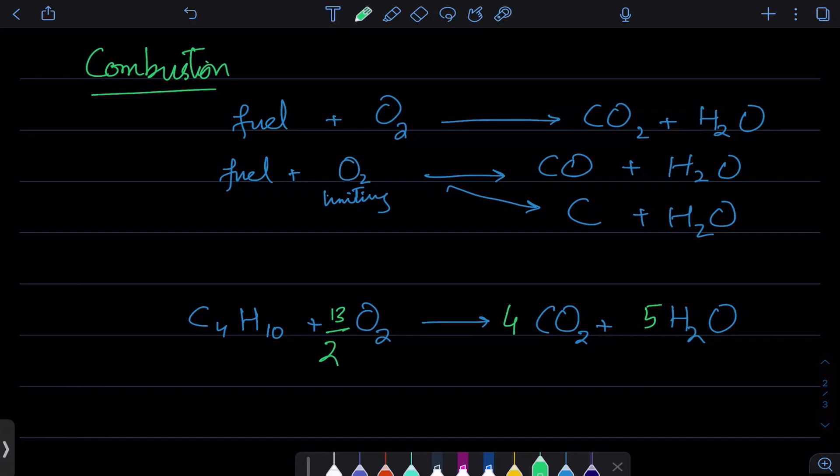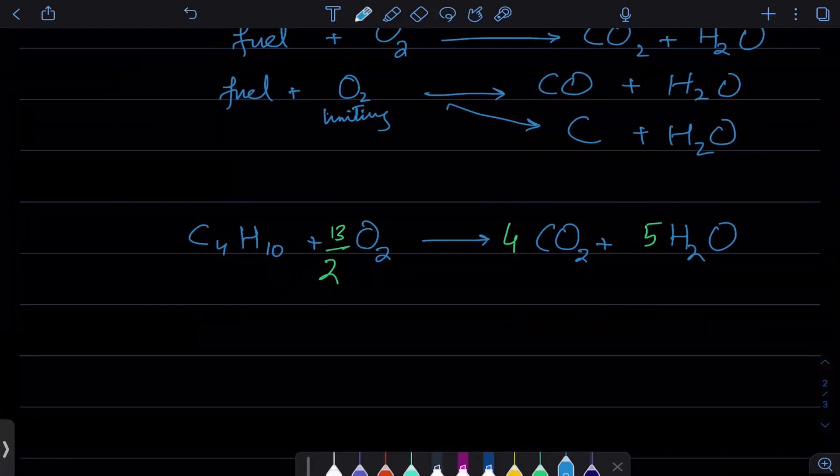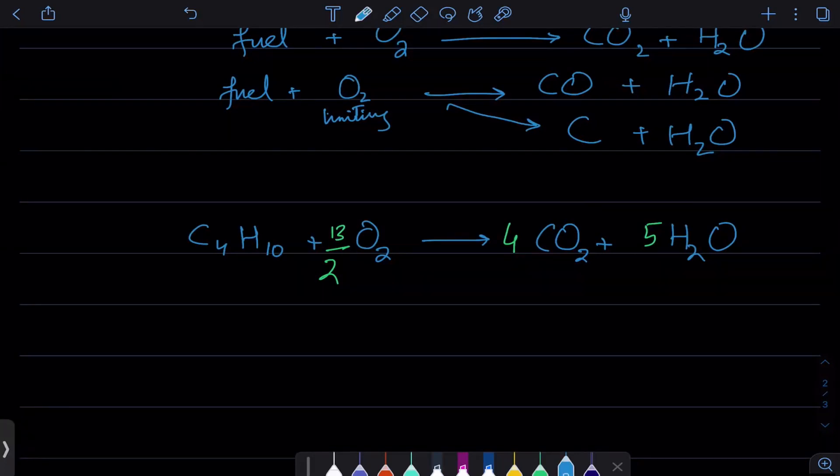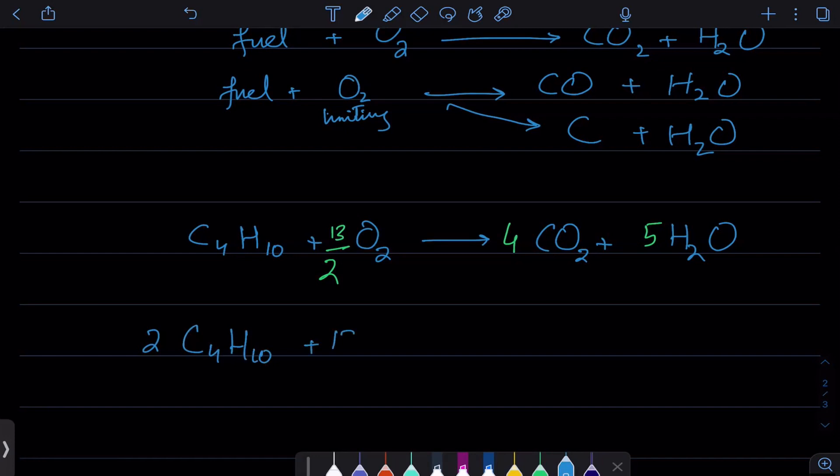If you're not comfortable with fractions, just write the fraction and double the whole thing. Everything doubles: this becomes 2 C4H10, this becomes 13 O2, this becomes 8 CO2, and this becomes 10 H2O. And there you go, the equation is balanced.